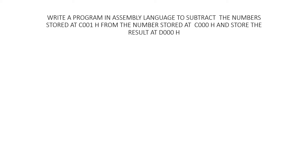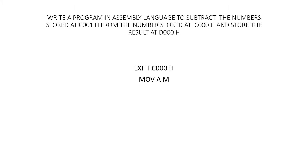The example is: write the program in assembly language to subtract the number stored at C001H from the number stored at C000 and store the result at D1000. What we are trying to understand is how to subtract from one memory location to another. First, point to memory location C000, take the data to accumulator, go to the next memory location, and use the instruction subtract memory. The subtract memory instruction subtracts the contents of memory from the accumulator and the result is placed in the accumulator.